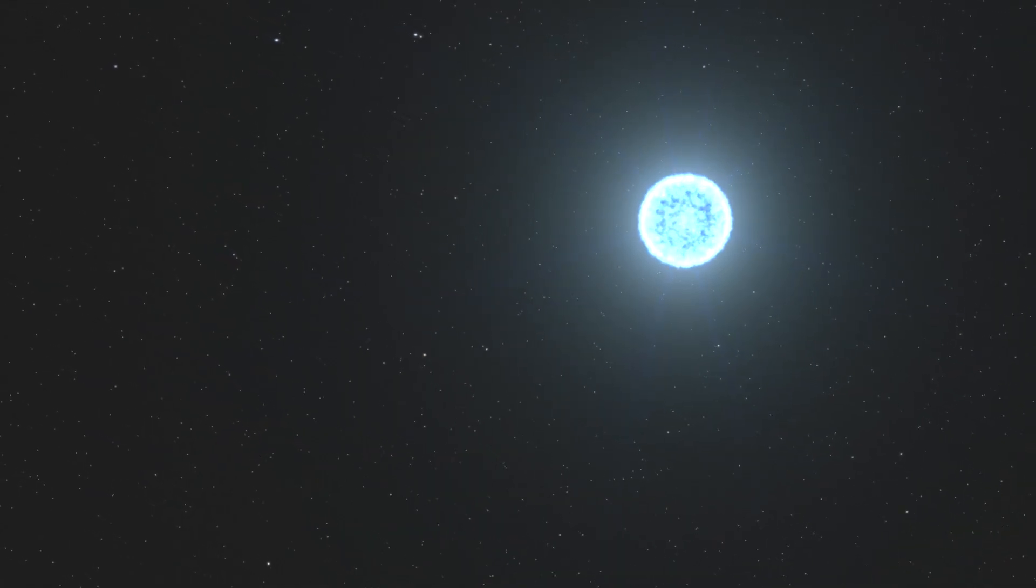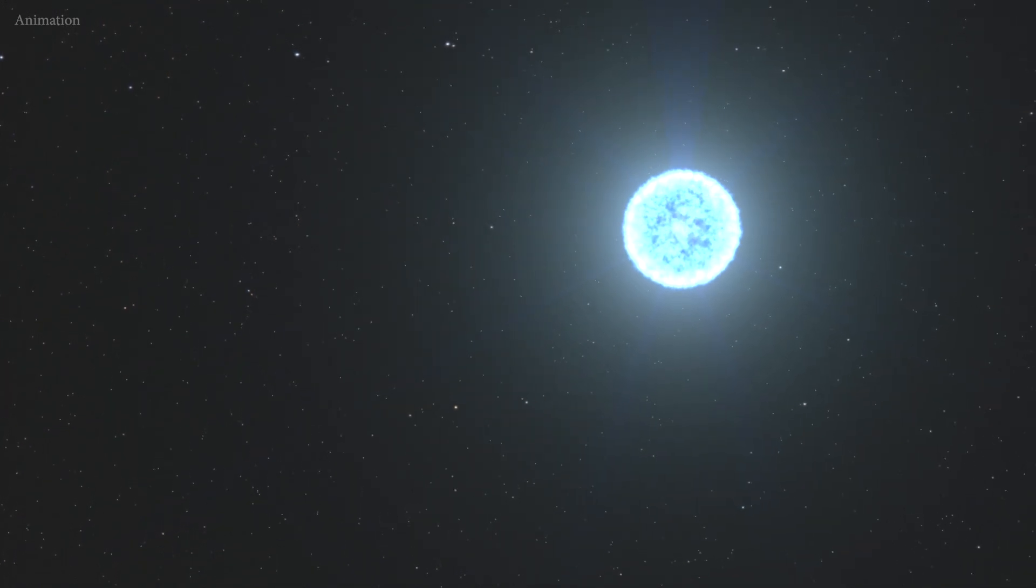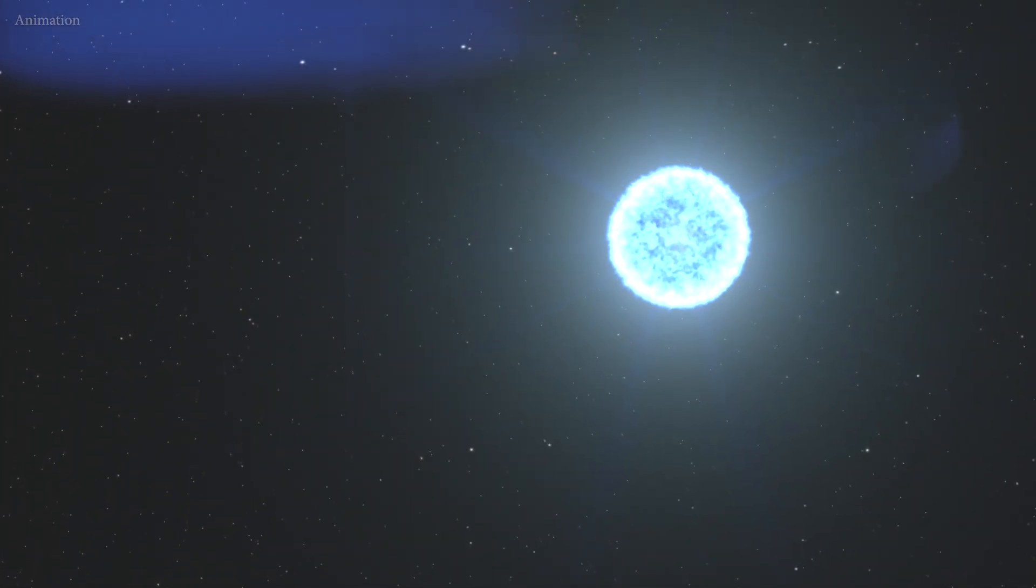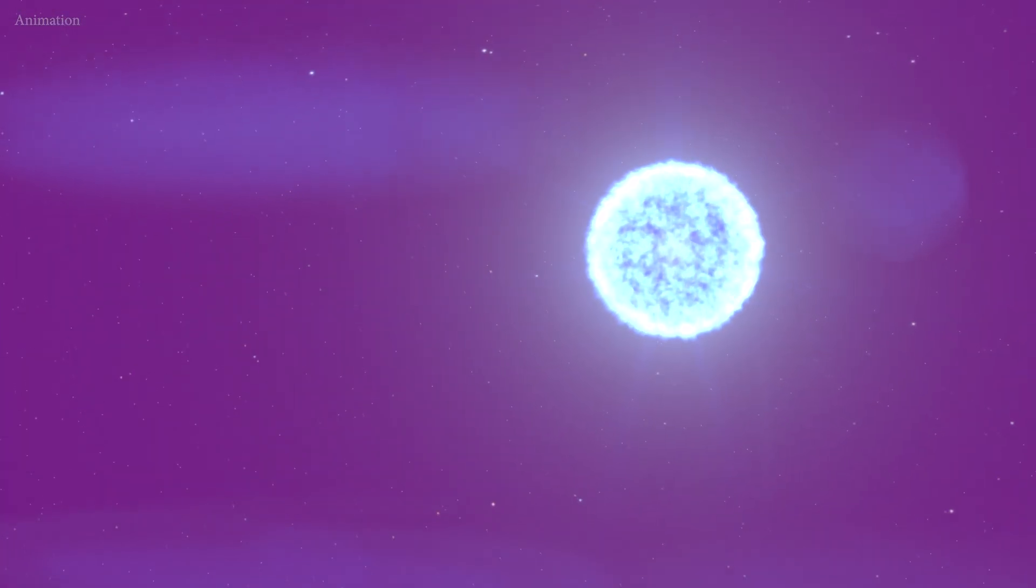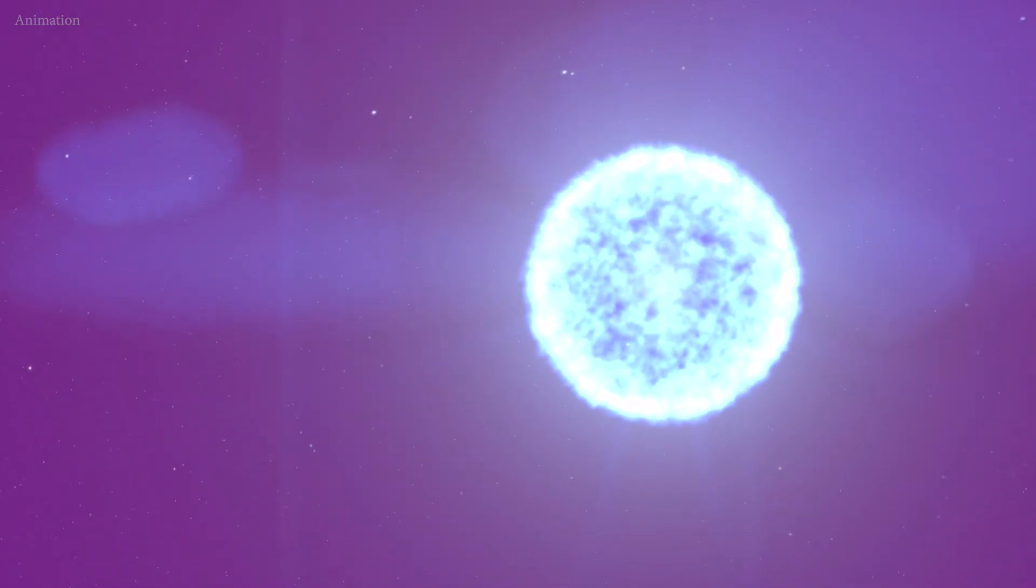The white dwarf is 128 light-years away and 20% more massive than the Sun. In visible light, it looked like a typical white dwarf, but Hubble's ultraviolet data revealed something unusual: evidence of carbon in its atmosphere.